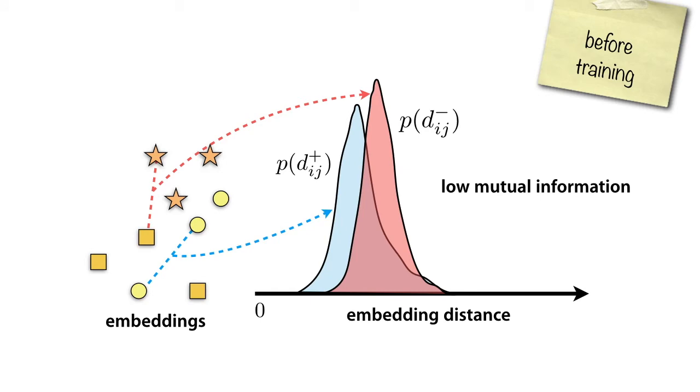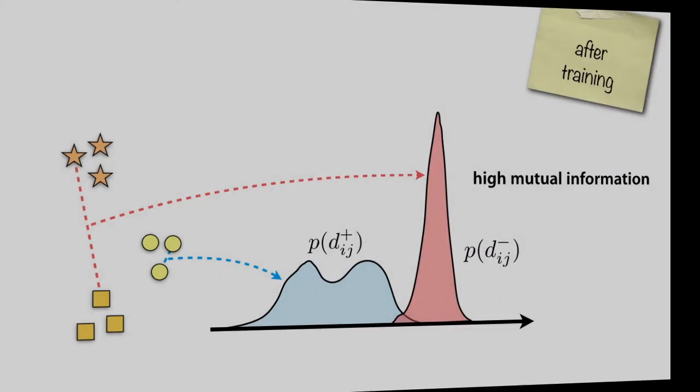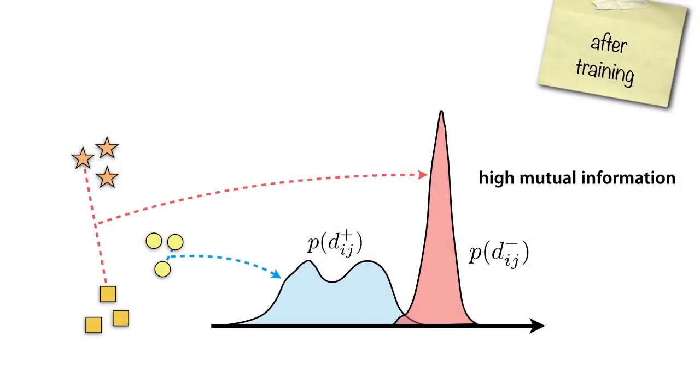Here we have the distributions of matching and non-matching image pair distances. We show that we can learn a better metric by maximizing the divergence between these distributions as in this figure, and this is in fact equivalent to mutual information maximization.